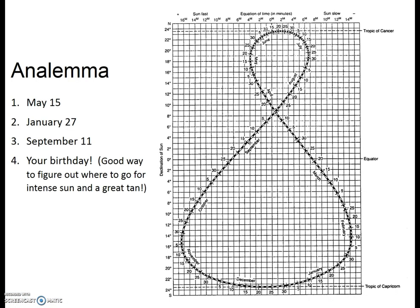Now try a few on your own: May 15th, January 27th, September 11th, and your birthday. Pause the video here and figure out the declination of the Sun for each of these days — you'll get much more out of this if you try it first and then compare your answers to the correct answers. Don't just look at the answers and say 'oh yeah, that makes sense.' Alright, here are the answers. Pause the video and check your answers with the correct answers provided.